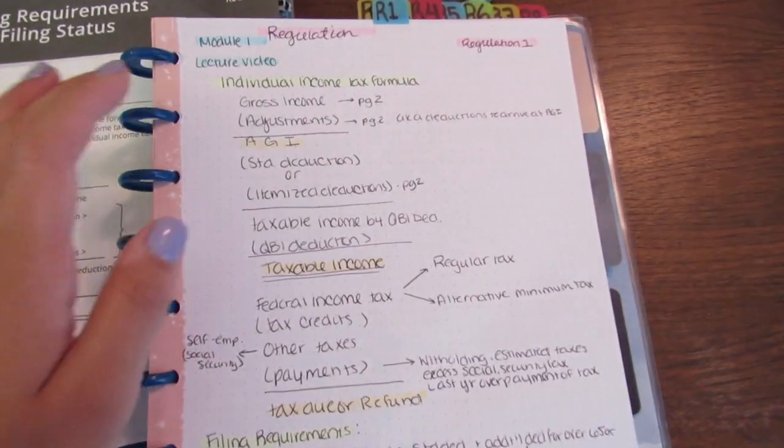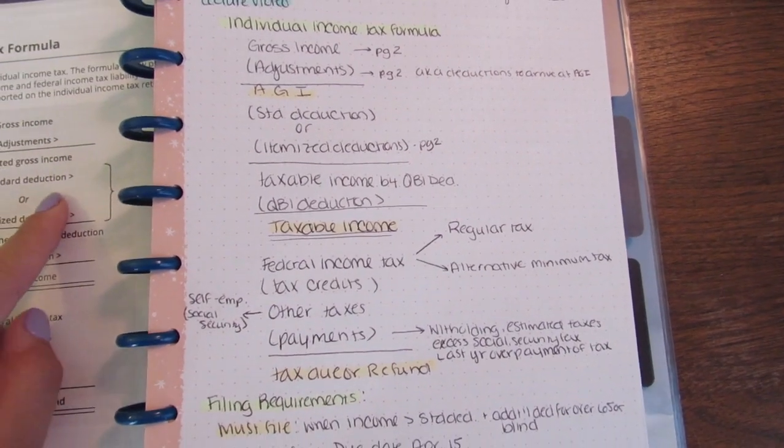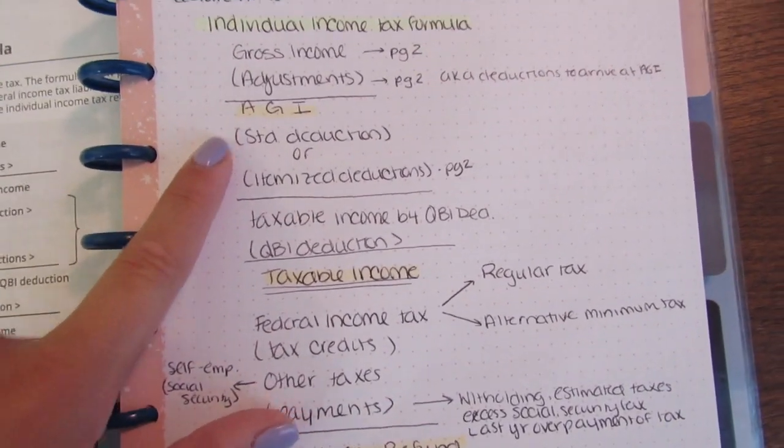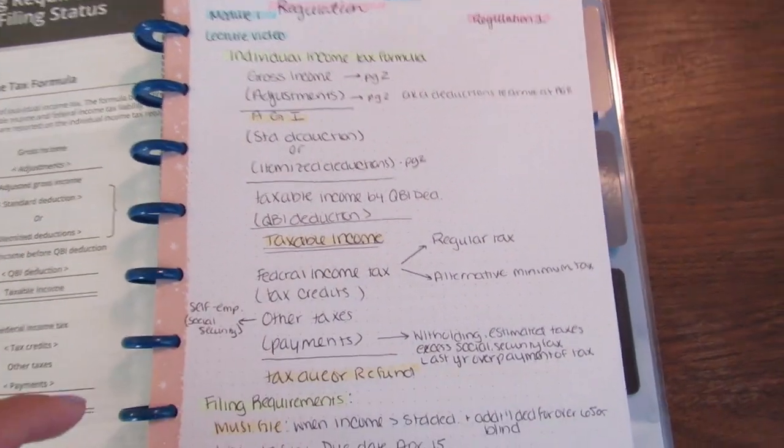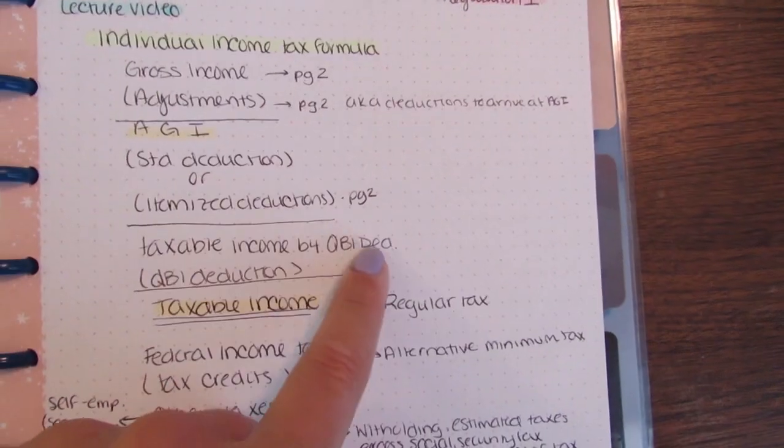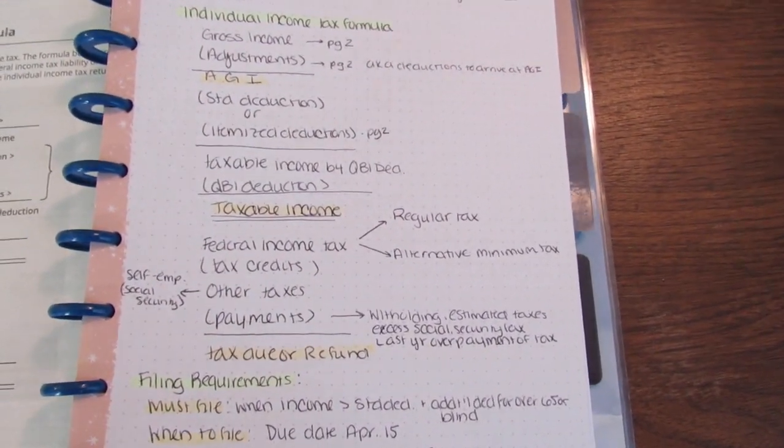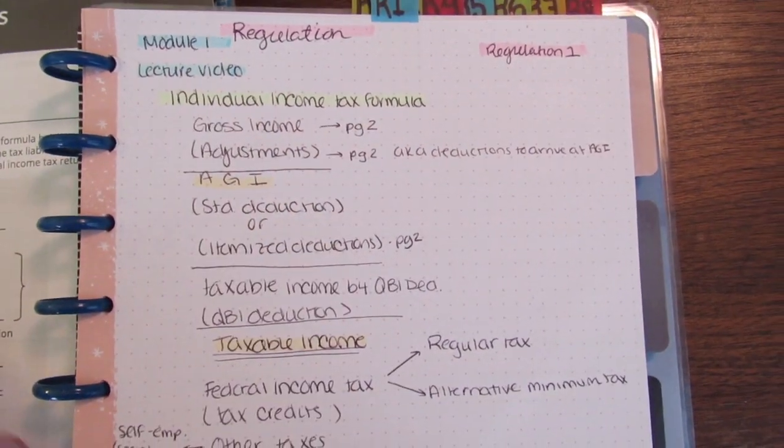So I wrote it in my notebook. So anything that had like an important total like AGI, I know is important for my tax class, so I highlight that in orange. Arriving at taxable income, very important, put in an orange. Now you'll see off to the side I have these little notes and this is just to save time and to save space in your notebook. Gross income page two, I'll show you that in a minute.